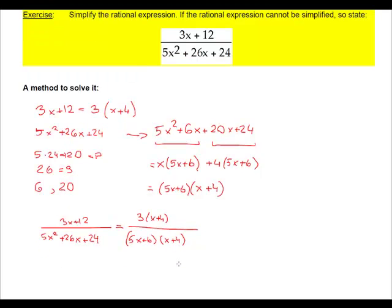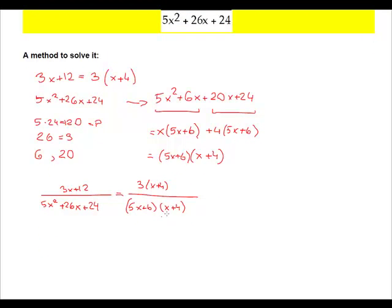Now we can see that x plus 4, the parenthesis, appears on the top and at the bottom. We can cross it out. We can simplify so that it's left only 3 on top over only 5x plus 6 at the bottom. Because we have no other factor at the bottom, we can rewrite it without the parenthesis.